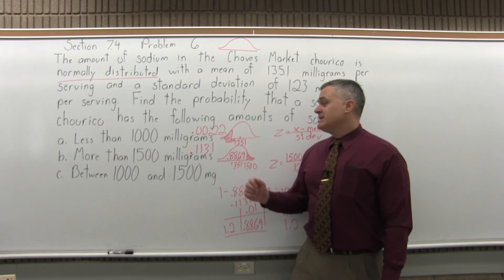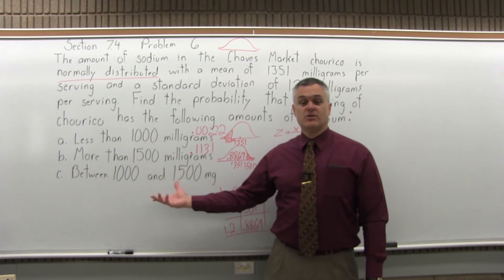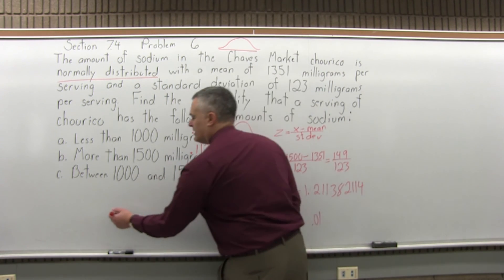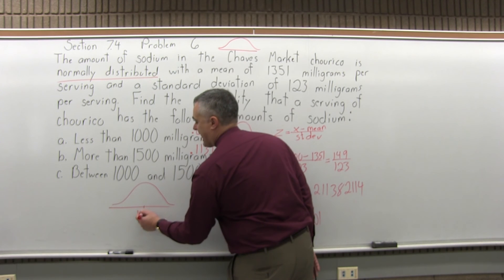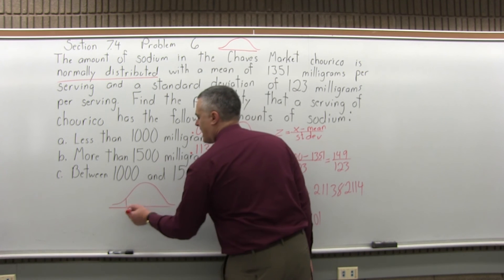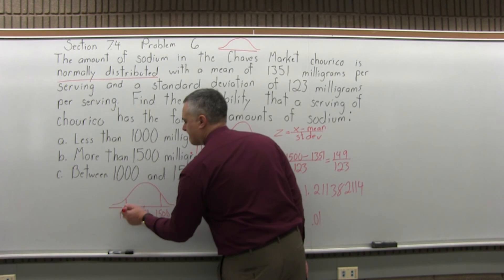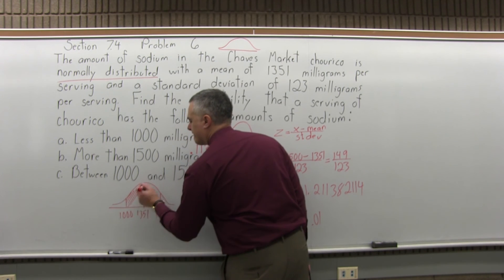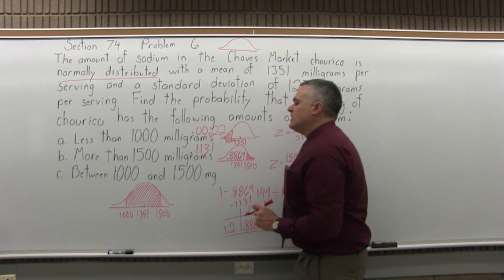Now part C: what's the probability that one serving of Charves would have between a thousand and 1,500 milligrams of sodium? So again, visually, what would that look like? We'll have a bell curve. The middle number will be the average, which they give you in the question, 1,351. So between a thousand and 1,500, and I'll shade that region of my drawing.